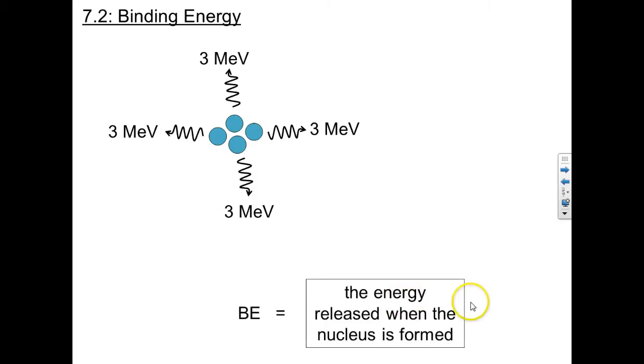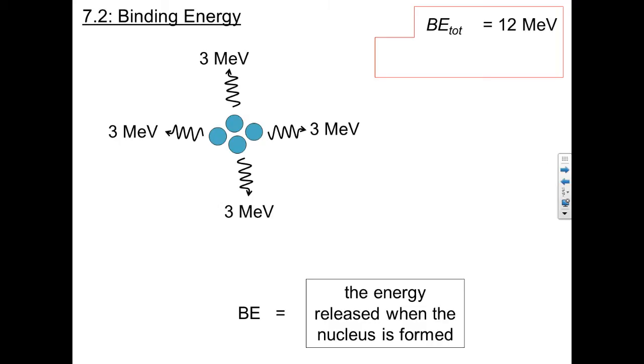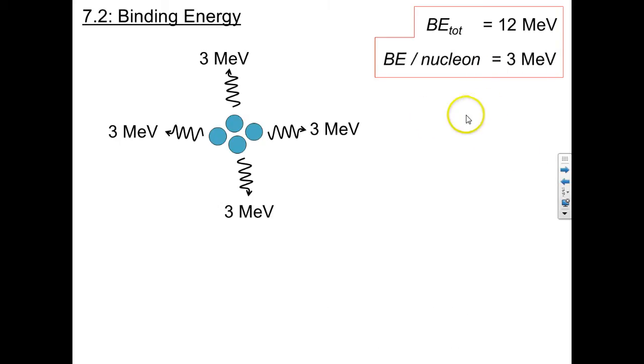Specifically, the binding energy is the energy released when the nucleus is formed. So in this case, the total binding energy is three plus three plus three plus three, or 12 MeV. And per nucleon, the binding energy is just three mega-electron volts.